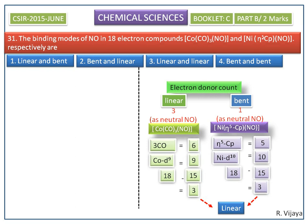So both structures are linear according to the electron donor count method. The structures can also be identified by Enemark-Feltham notation, which is used to describe the number of d-type electrons present in a complex. It is deliberately ambiguous because the true oxidation state of a metal coordinated by a non-innocent ligand is often unclear.